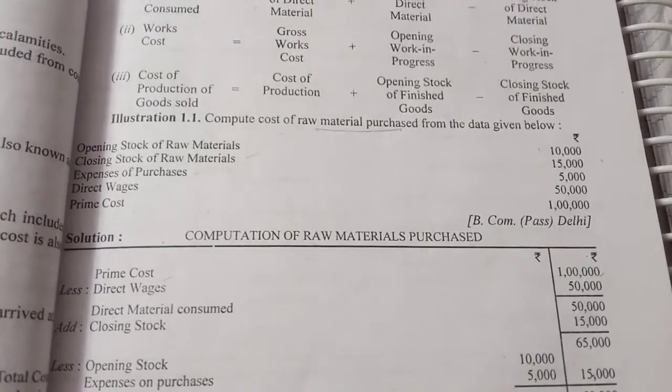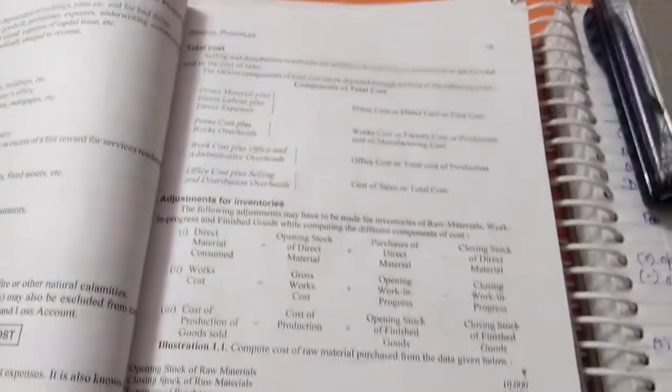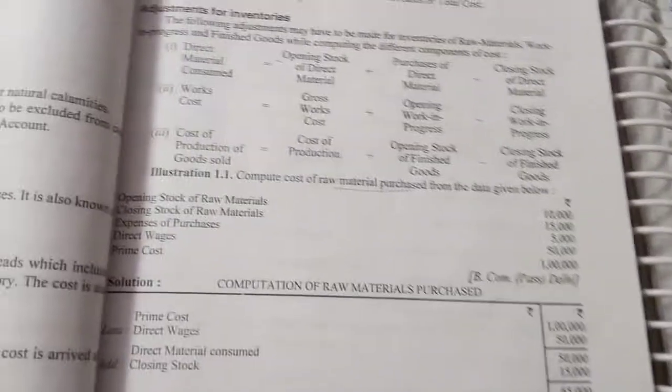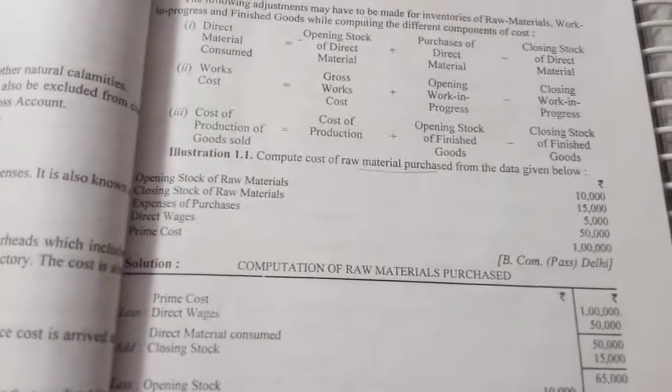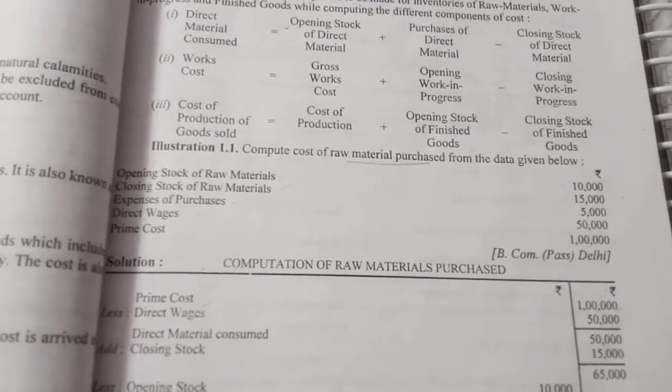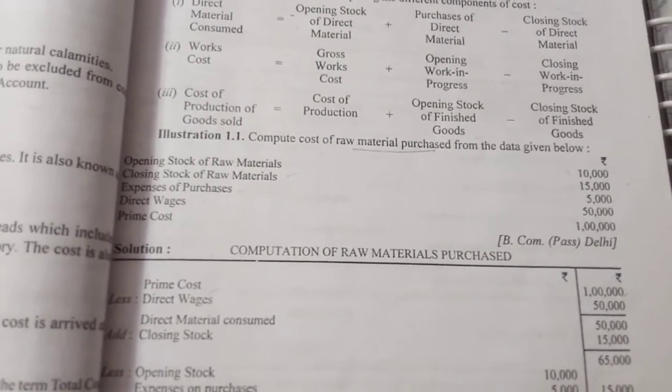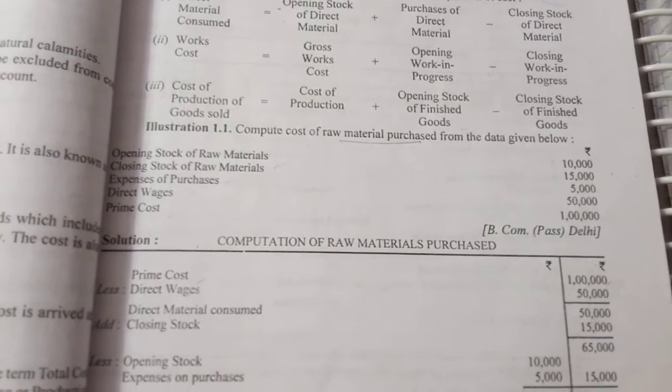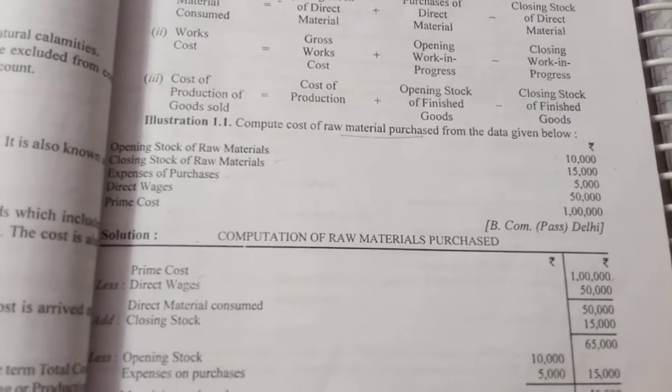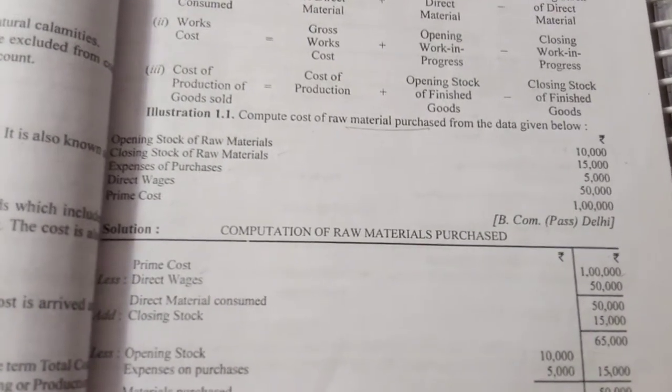This is Illustration 1.1 on page number 13. Compute the cost of raw material purchased from the data given below: opening stock of raw material equals 10,000, closing stock 15,000, expenses of purchase 5,000.